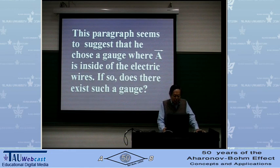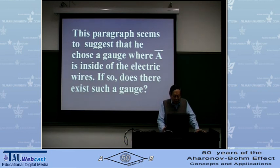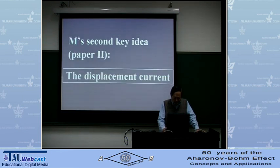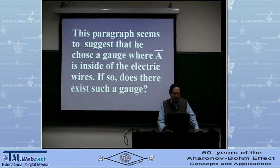This paragraph seems to suggest that he chose a gauge where A is inside the electric wires. If so, does there exist such a gauge? Does there exist such a unique gauge? All of these questions Maxwell never mentioned, and this remains perhaps an important subject for historians of science to look into. Be that as it may, it is clear that the vector potential being identical to Faraday's electrotonic state was Maxwell's great first discovery in paper one.